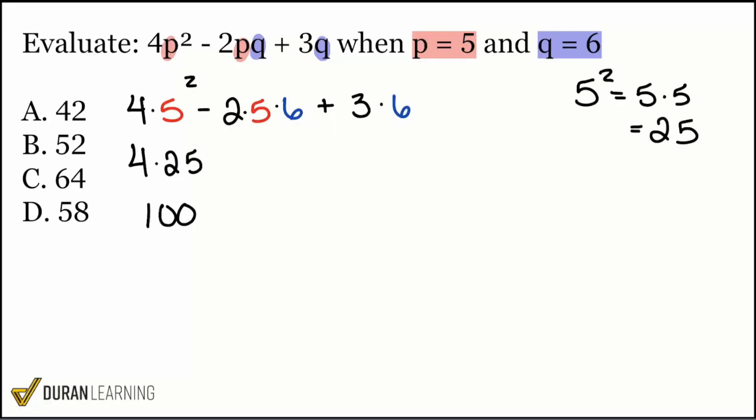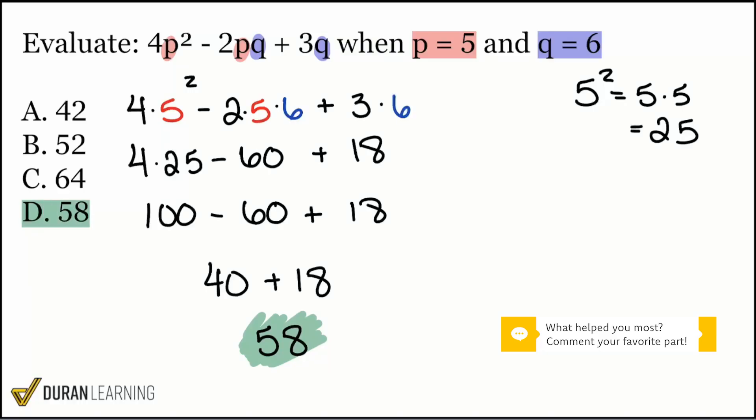On this part we have 2 times 5 which is 10, times 6 that's going to be 60, so minus 60 because we have that negative there in front. Then lastly we have 3 times 6 which is 18. We take 100 minus 60 which is 40, then add 18 which gives us 58. The correct answer is answer choice D.